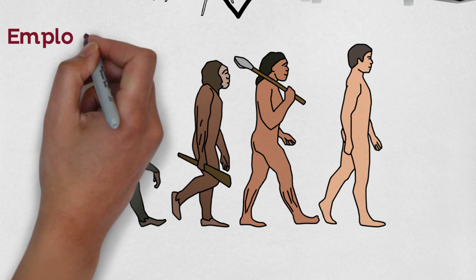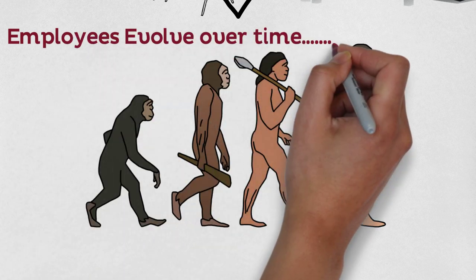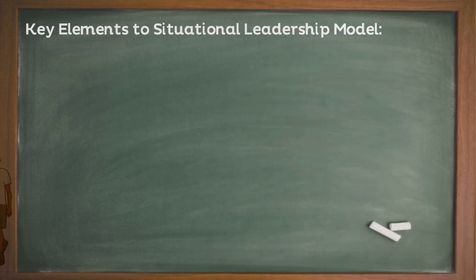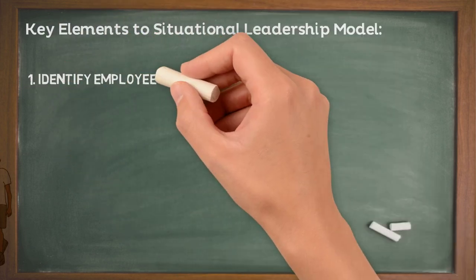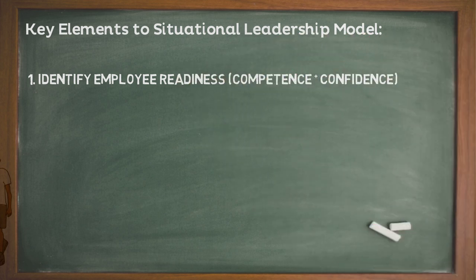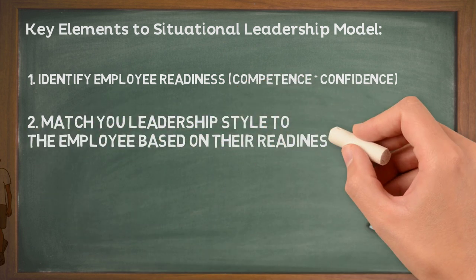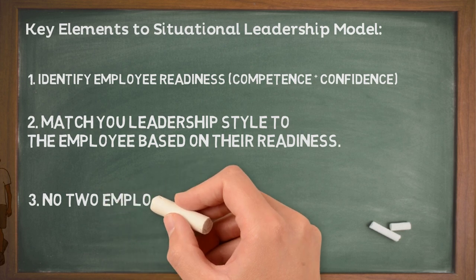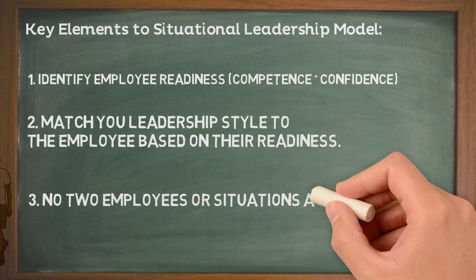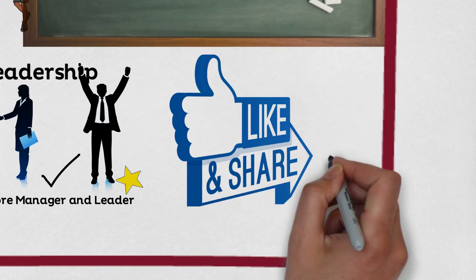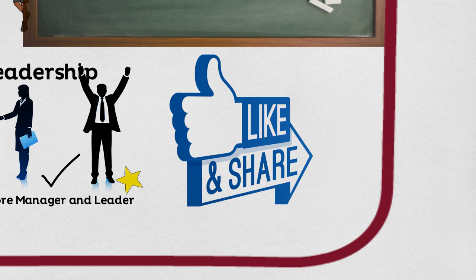Remember: as an employee evolves over time, supervisors or leaders must change their leadership style accordingly. To wrap up, the key elements of situational leadership are: number one, identify employee readiness — their competence and confidence; number two, match your leadership style to the employee based on that readiness; and number three, no two employees or situations are alike. Thank you for watching another Canadian Channel feature — please feel free to like, share, or subscribe.